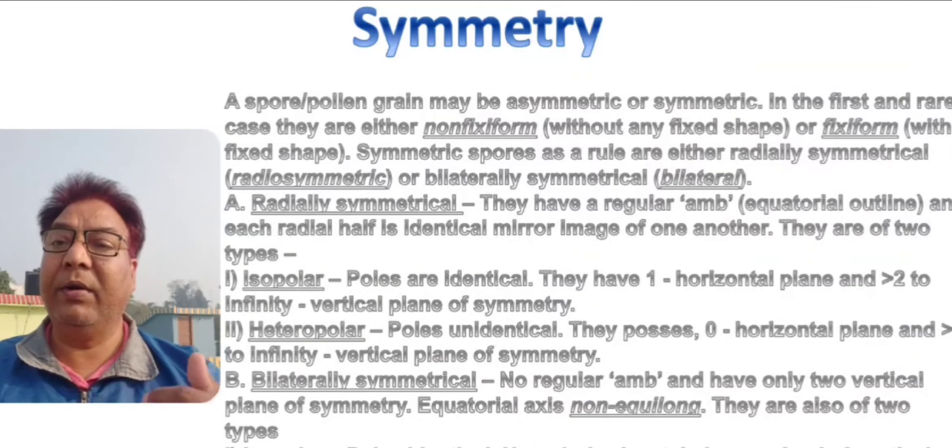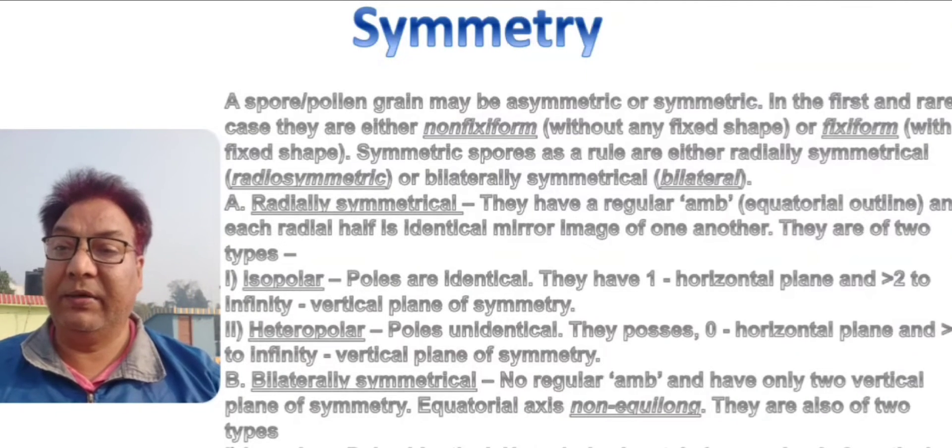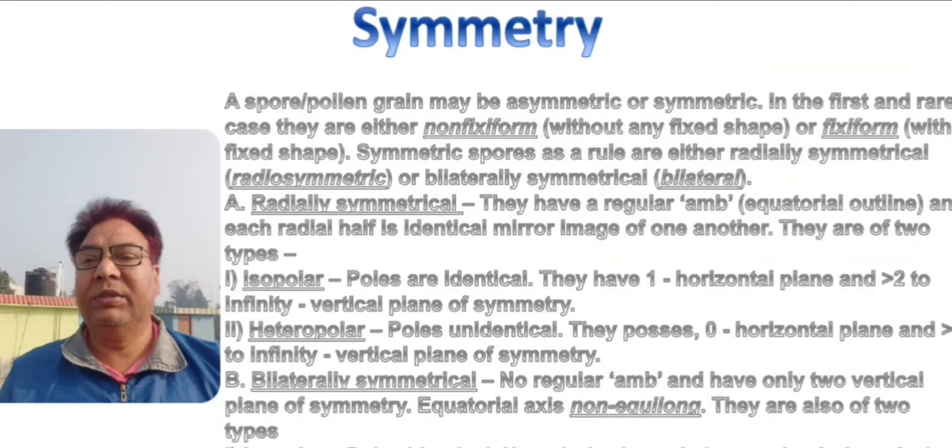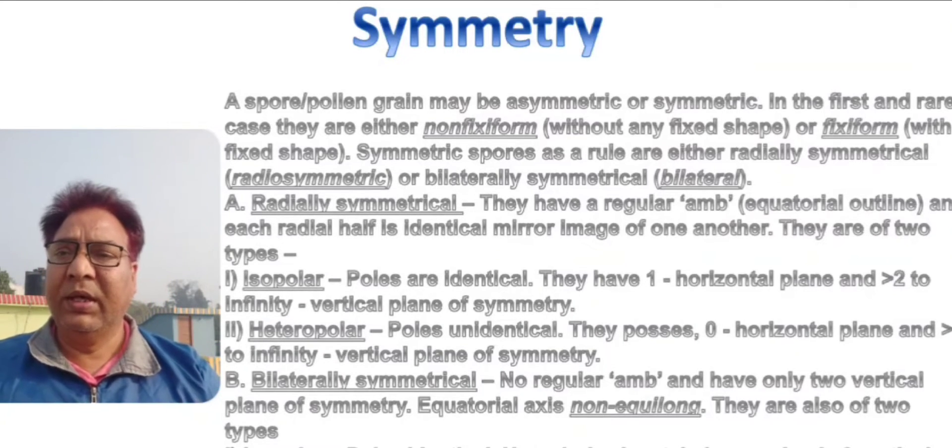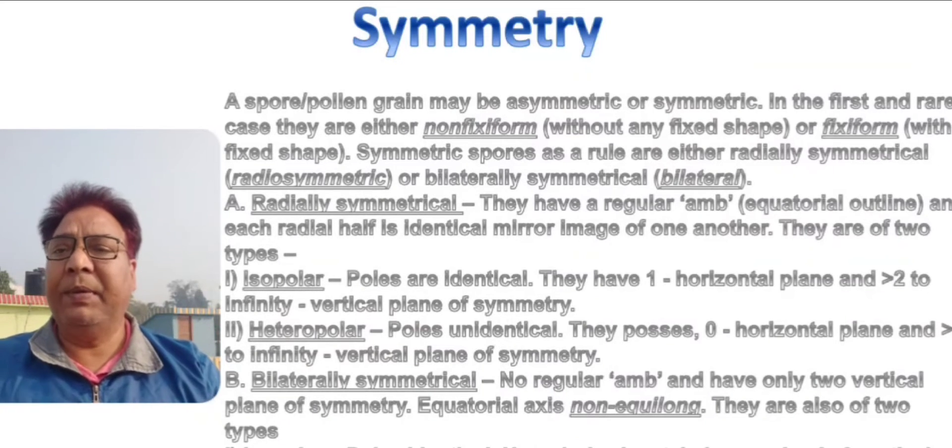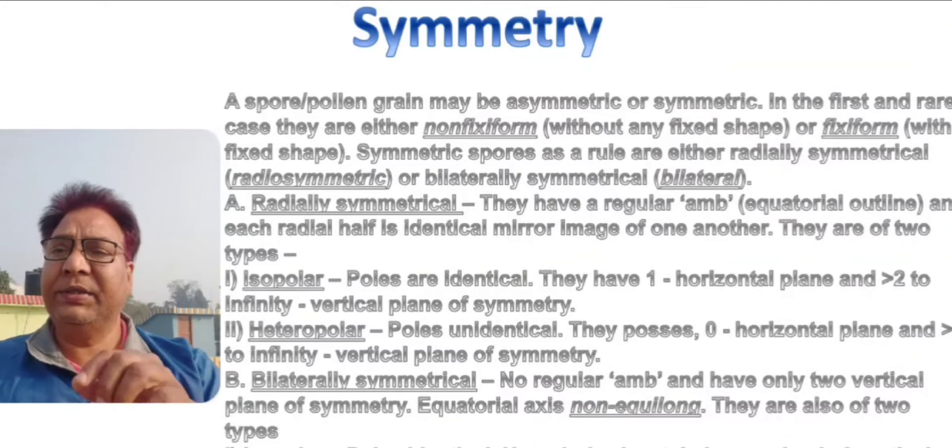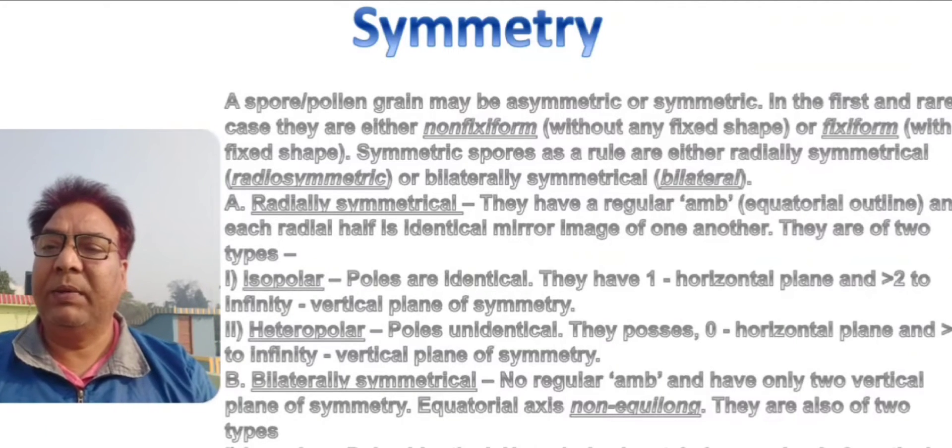If there are infinity vertical plane of divisions, then the spore is completely spherical. There are different types of ambs. You get polygonal, you get raised spores. All these, if they are radially symmetrical, have more than three vertical planes of divisions.